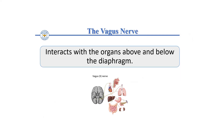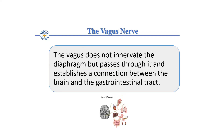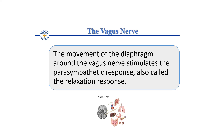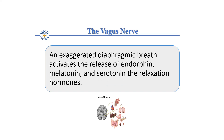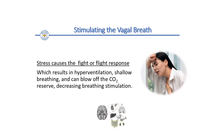The vagus nerve interacts with the organs above and below the diaphragm. The vagus does not innervate the diaphragm but passes through it, establishing a connection between the brain and the gastrointestinal tract. The movement of the diaphragm around the vagus nerve stimulates the parasympathetic response — also called the relaxation response. An exaggerated diaphragmatic breath activates the release of endorphins, melatonin, and serotonin, the relaxation hormones.